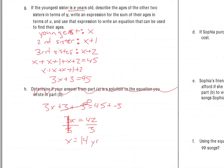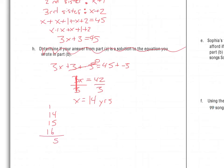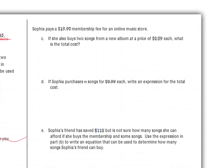So the youngest sister is 14 years old, which means their ages are 14, 15, and 16. We can check that a couple of ways — plugging back into the original equation, or just checking: if they're 14, 15, and 16, does that add up to 45? This adds up to 15, carry the 1, and indeed this does add up to 45. Let's come over and look at the next problem.